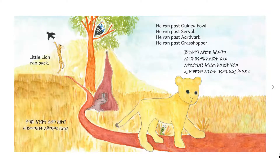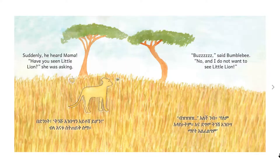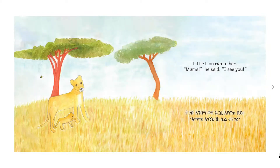Little Lion ran back. He ran past guinea fowl. He ran past Serval. He ran past Aardvark. He ran past Grasshopper. Suddenly, he heard Mama. Have you seen Little Lion? She was asking. Bzzz, said Bumblebee. No, and I do not want to see Little Lion. Little Lion ran to her. Mama, he said. I see you.